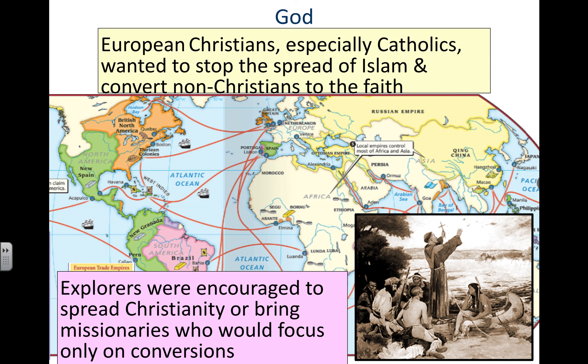The last reason is God. European Christians, especially Catholics, wanted to stop the spread of Islam and convert non-Christians to the faith. This was largely a result of the Protestant Reformation, as the Catholic Church had been losing followers and faced new criticism. There was increasing urgency for the Catholic Church to promote a positive image and gain new followers, leading to the rise of missionaries — priests, nuns, monks, and friars who would seek to convert native peoples to Christianity. Sadly, this conversion was largely forced upon most people they encountered.